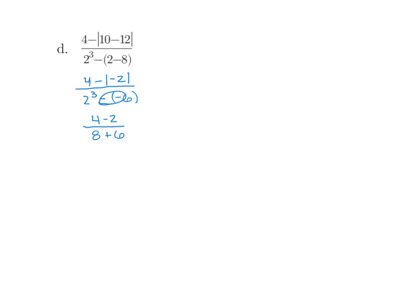To finish this off, we get 4 minus 2 is 2, and 8 plus 6 is 14. We want to simplify the fraction, so we're going to divide top and bottom by 2 and we get 1 over 7.